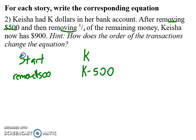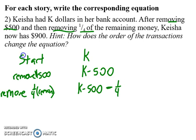And now it says remove one-fourth of the remaining. So if I'm looking at that, I'm removing one-fourth of the remaining amount. Well, what is the remaining amount? It's this entire K minus 500. So this is what's remaining. And I'm going to remove, so I'm going to subtract one-fourth of what's remaining.